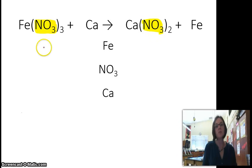So first thing I like to do is count reactants. So how many irons is this? It's one. How many nitrates is this? It's three. How many calciums is that? It's one. Then I come over to the product side. How many calciums is this? It's one. How many nitrates is this? It's two. And how many irons? It's one.